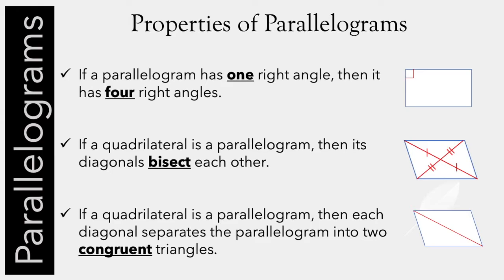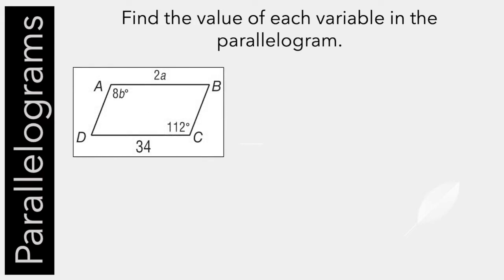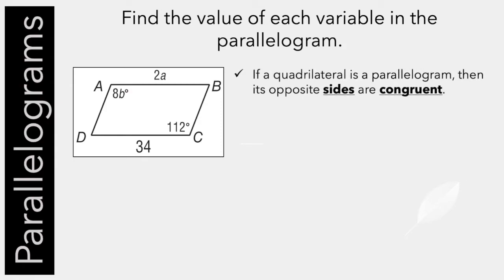So we're going to use this information now to solve a couple problems. Find the value of each variable in the parallelogram. So study this one for a second. And what do we know? Well, we know that if a quadrilateral is a parallelogram, then its opposite sides are congruent. So we know that 2A equals 34. We can divide both sides by 2, and we know that A equals 17.